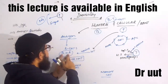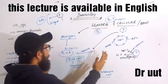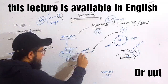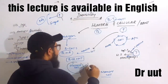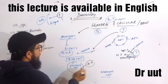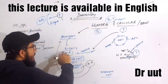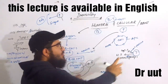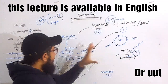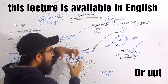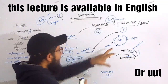Helper T cells release cytokines, which are regulatory proteins. The B cells combine with the antigen and, with the help of helper T cells, transform into plasma cells. These plasma cells then produce antibodies against the specific antigen, which bind to the antigen and destroy it, helping the body recover.